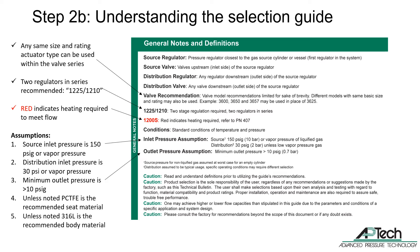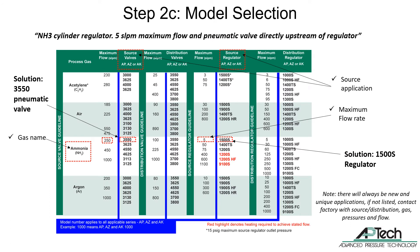All recommendations are for 316L body material. Stainless steel grade, surface finishes, connection size, and type are not specified. Now let's go back to our requirements: an ammonia cylinder regulator with 5 liters per minute maximum flow and a pneumatic valve directly upstream of this regulator. The selection guide lists gas names alphabetically. Each gas has recommended maximum flow rates for source and distribution valves and regulators. This application is a source application since it's a cylinder regulator and a valve upstream. The maximum flow rate is 5 liters per minute. The recommended valve is a 3550 pneumatic valve or 3625 manual valve. The recommended regulator is a 1500S.